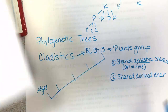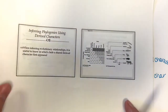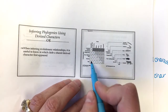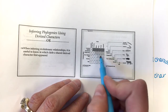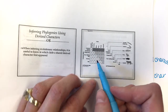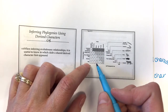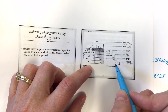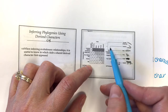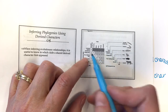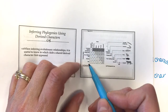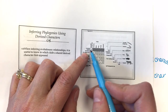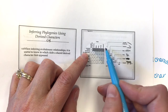Looking at the data matrix: a zero represents that an organism doesn't have the trait and a one means that they do. For example, for the vertebral column — the lancelet does not have it, but everything else does. So the lancelet is your out-group and forms the root of your tree.